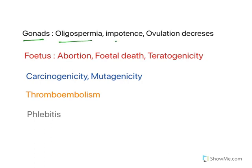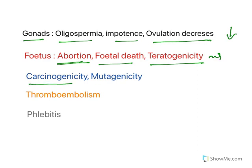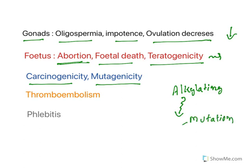In the gonads, oligospermia, impotency, and decreased ovulation will be observed because all these are based on cell multiplication. In the fetus, it may result in abortion, fetal death, and teratogenicity — abnormal conditions in the fetus. Some drugs can cause carcinogenicity and mutagenicity; alkylating agents alkylate the DNA, and if this alkylation carries to the next generation it causes mutation, known as mutagenicity, and if it results in cancer it is known as carcinogenicity.